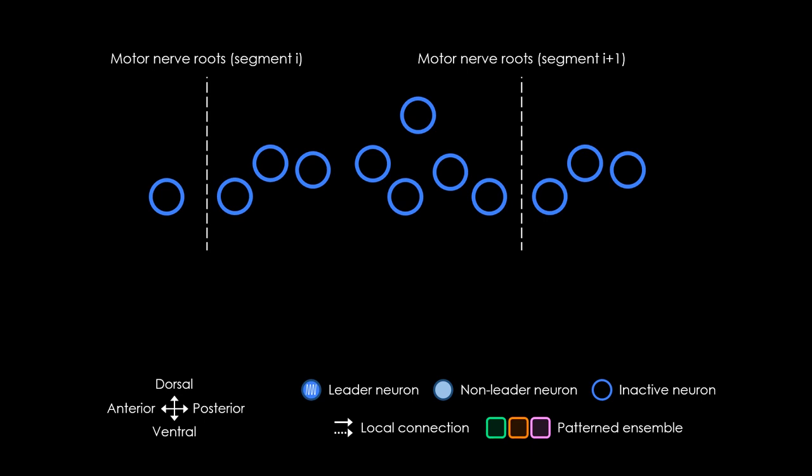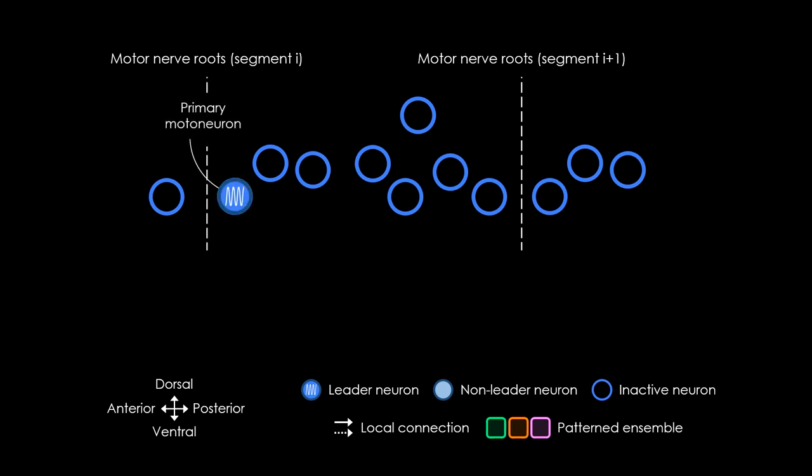These experiments and computational analyses revealed the developmental building plan of the spinal circuit and mechanisms that underlie the emergence of its function. We found that, surprisingly, motor neurons are the first active neurons in the circuit and act as leaders that recruit neighboring neurons to form the first local groups of neurons with patterned network activity.